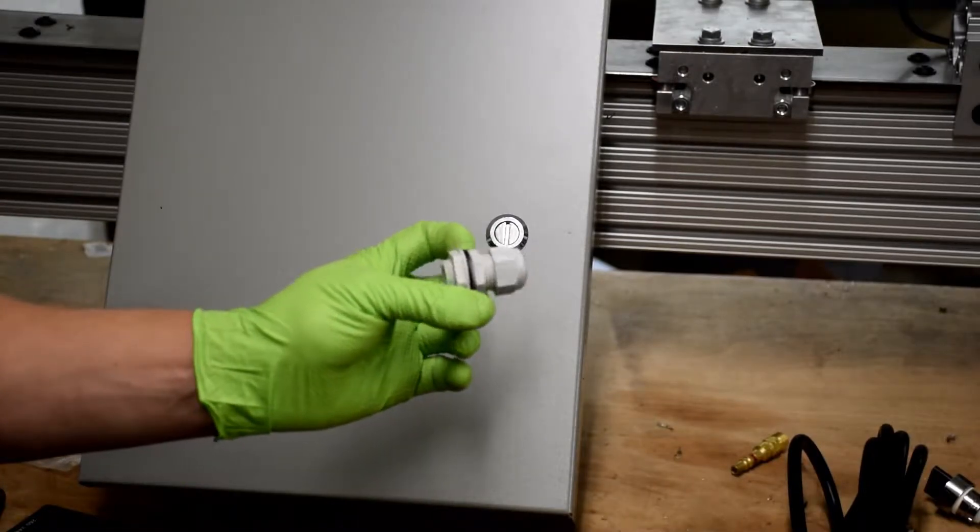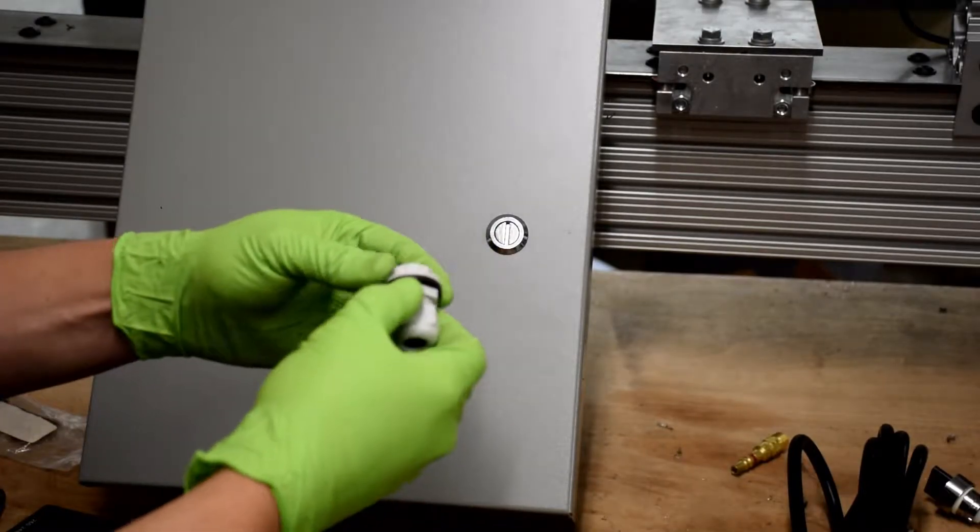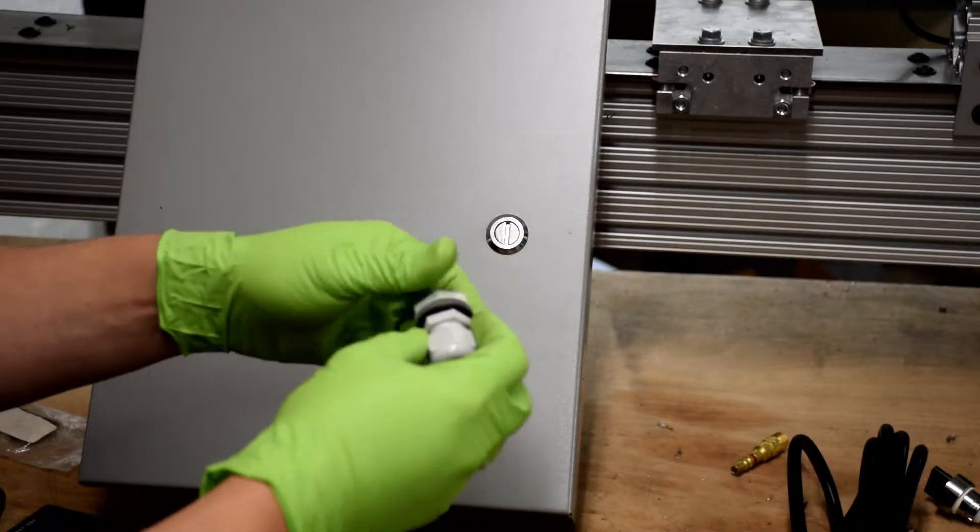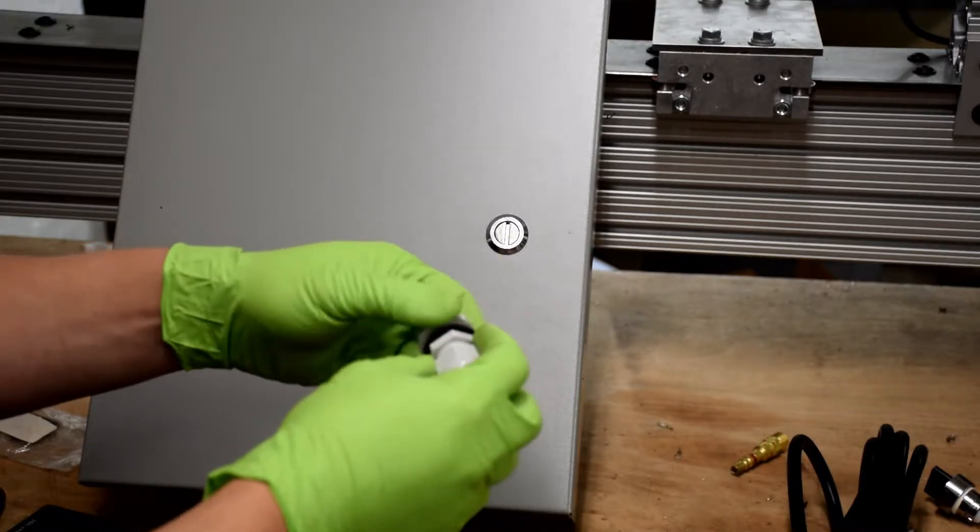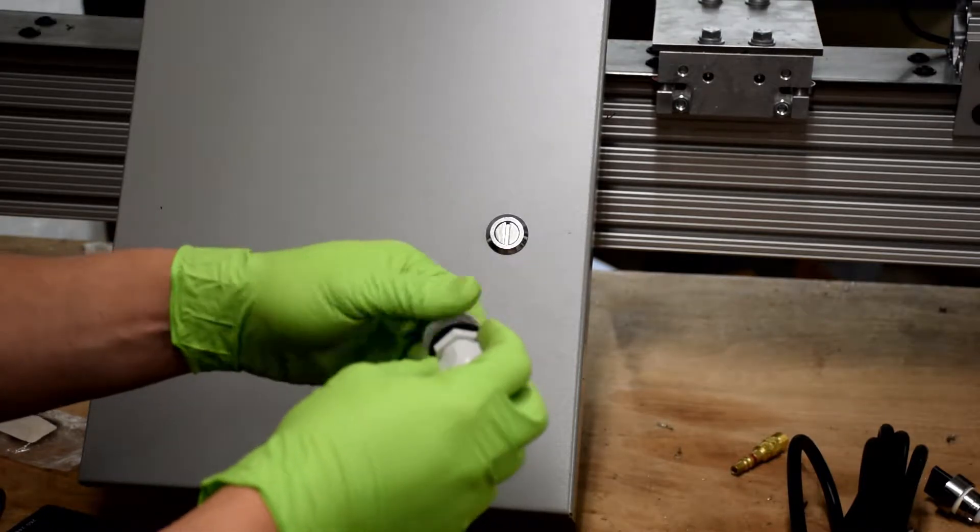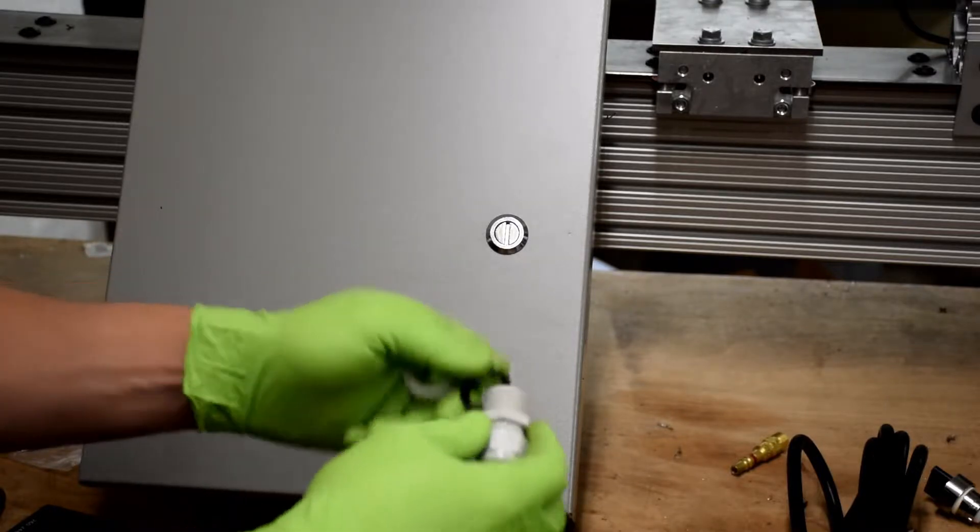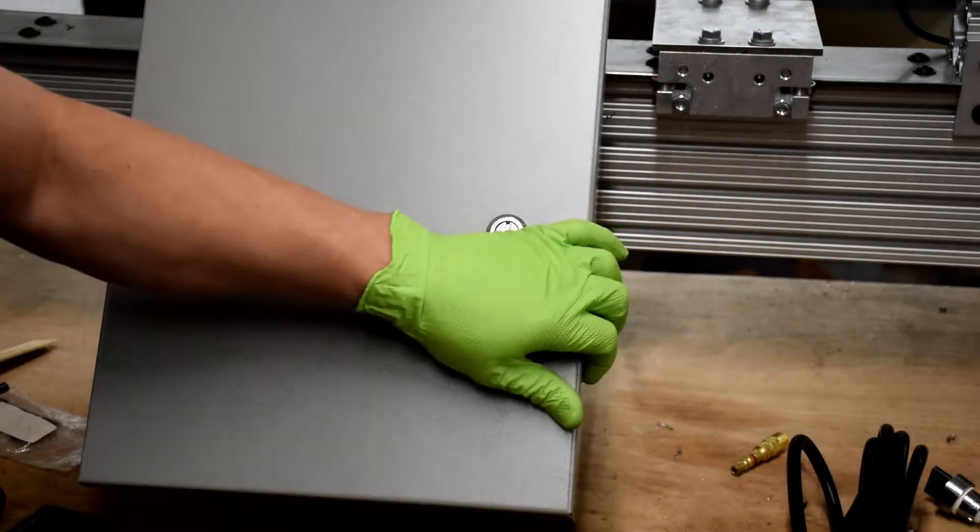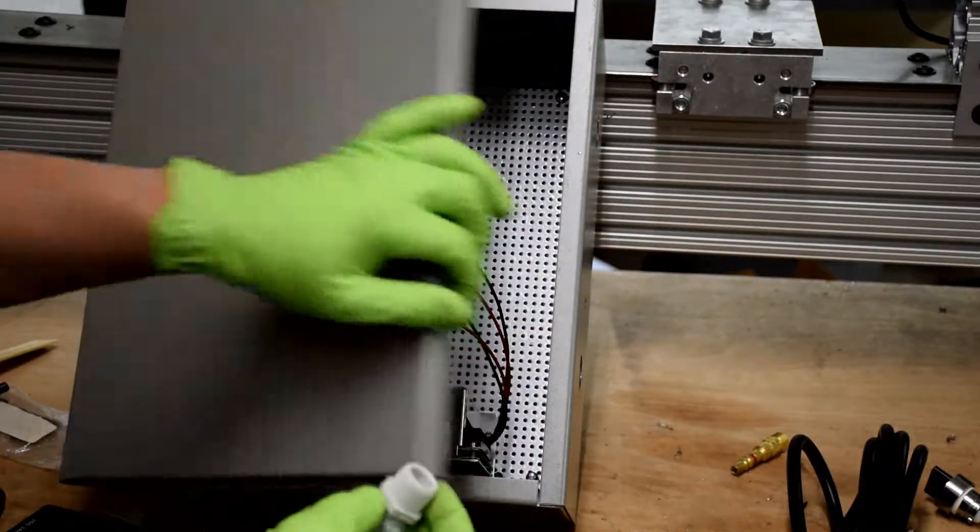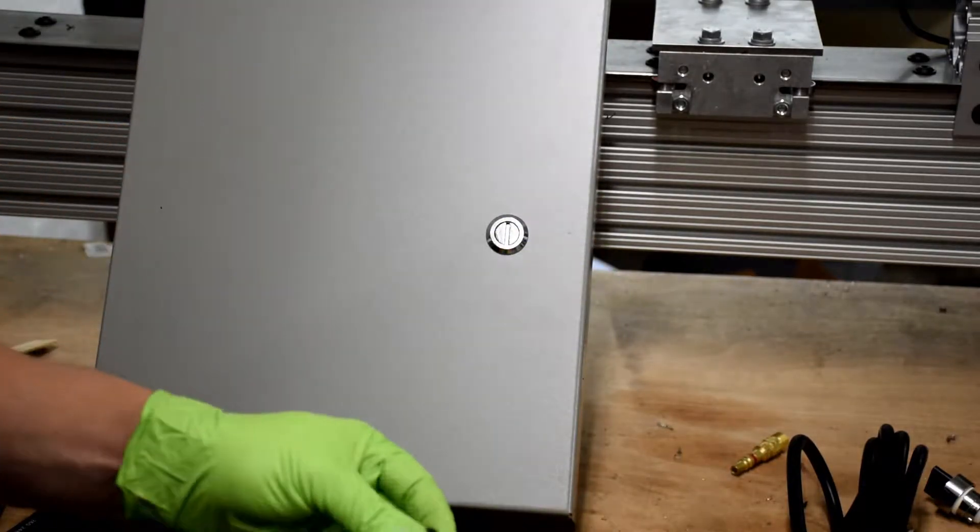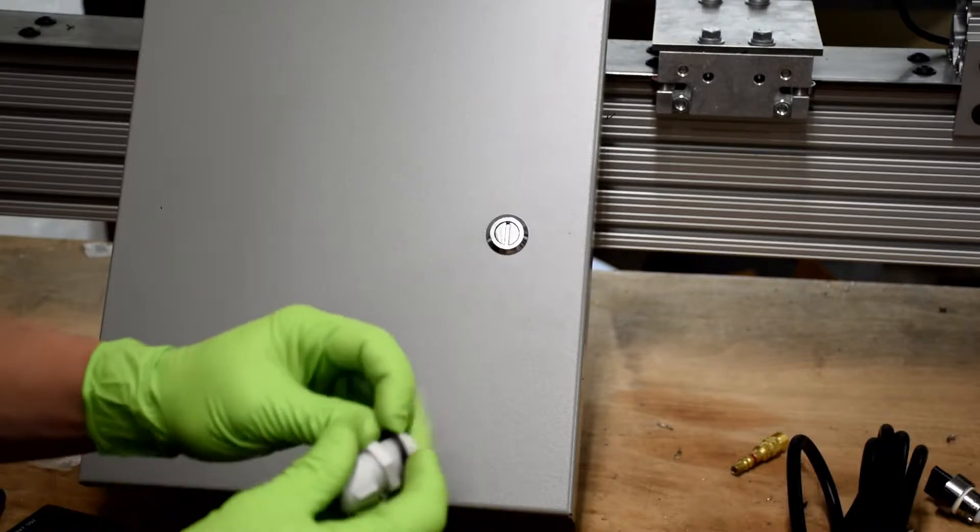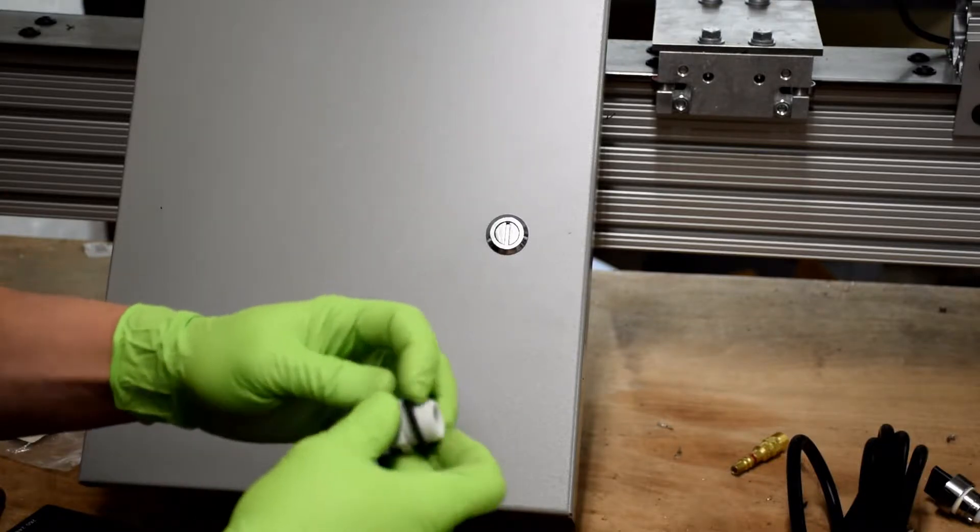The next thing to do is install the strain relief in the enclosure. It's going to go on the left side on the bottom hole. These are sometimes called cord grips or cable glands, which is kind of a gross name for them, but whatever.